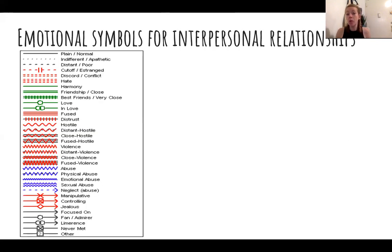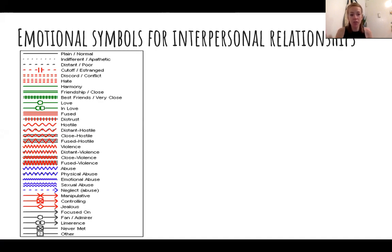Here are also some emotional symbols that you can use to address more emotional conflict or if you want to look at emotional patterns that a family may have. There's a wide variety of different symbols and variations you could use to represent abuse, distrust, or hostility. This is a great way to get a full picture of what types of relationships your client has with their family of origin or who they identify as their family.